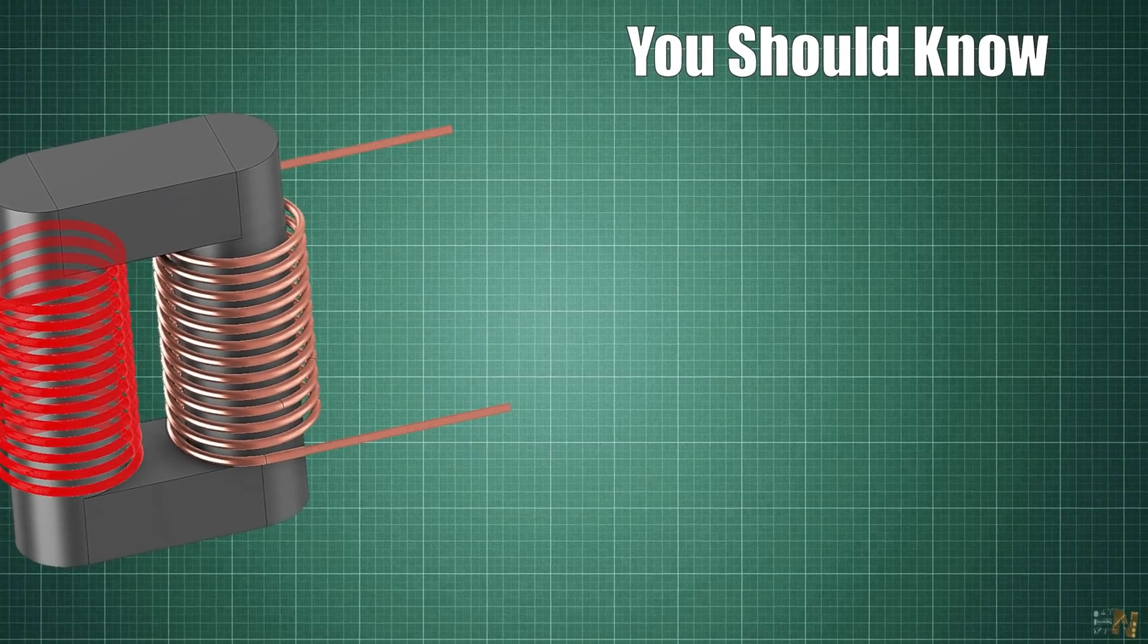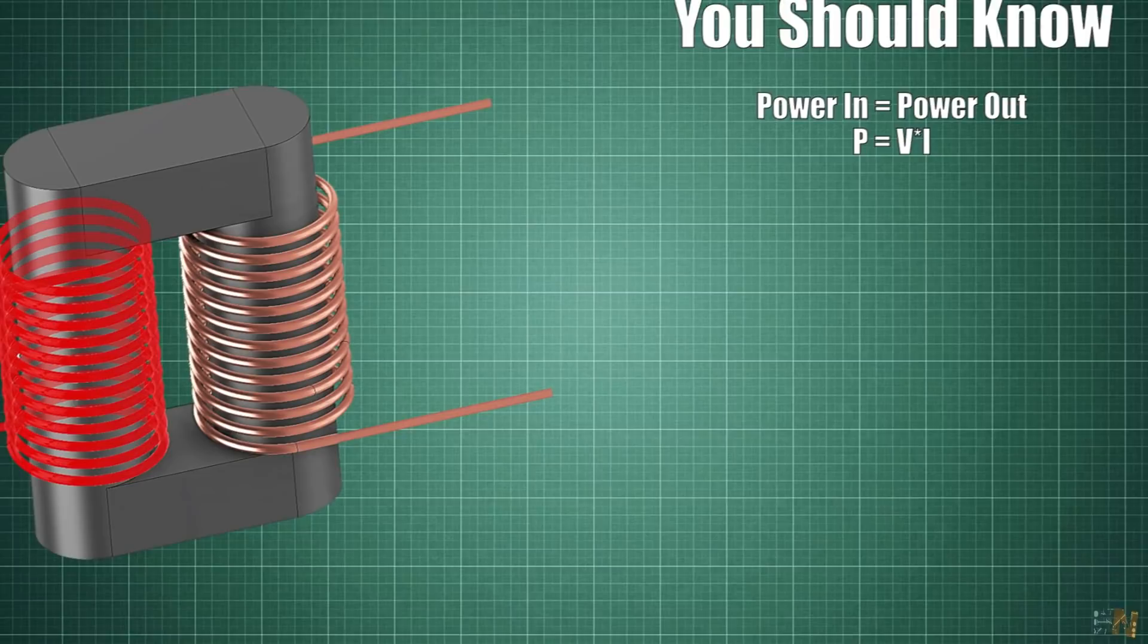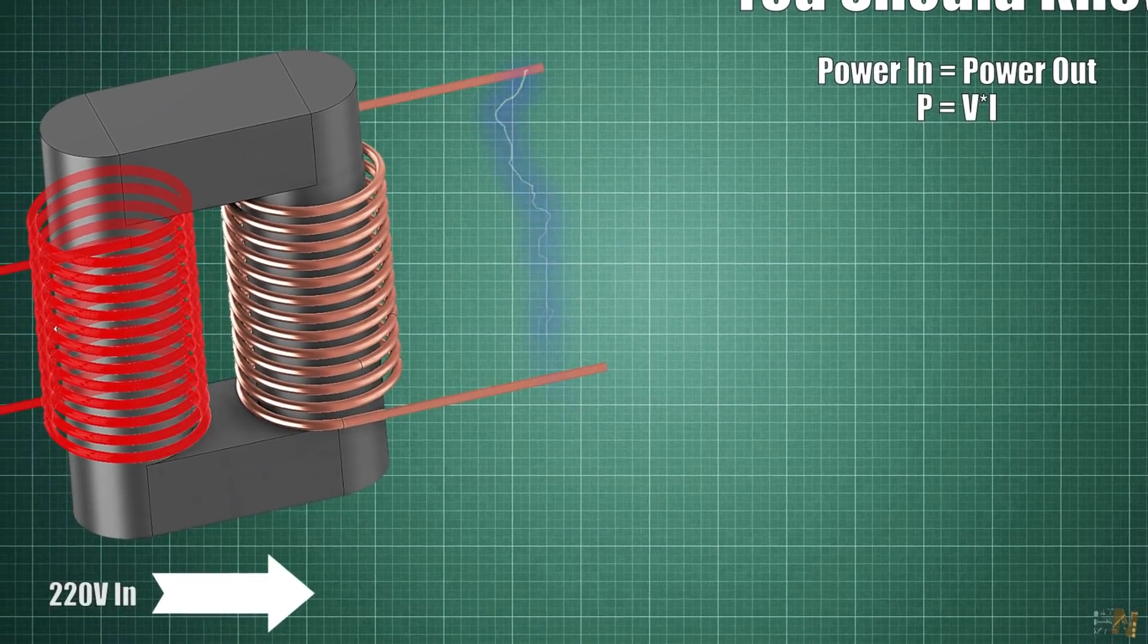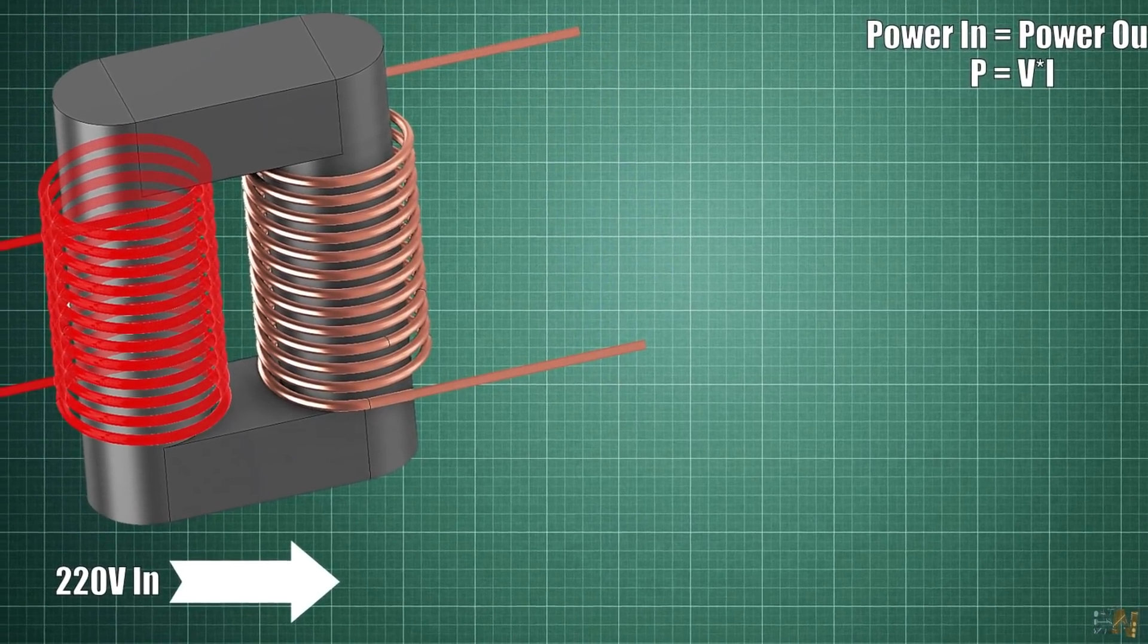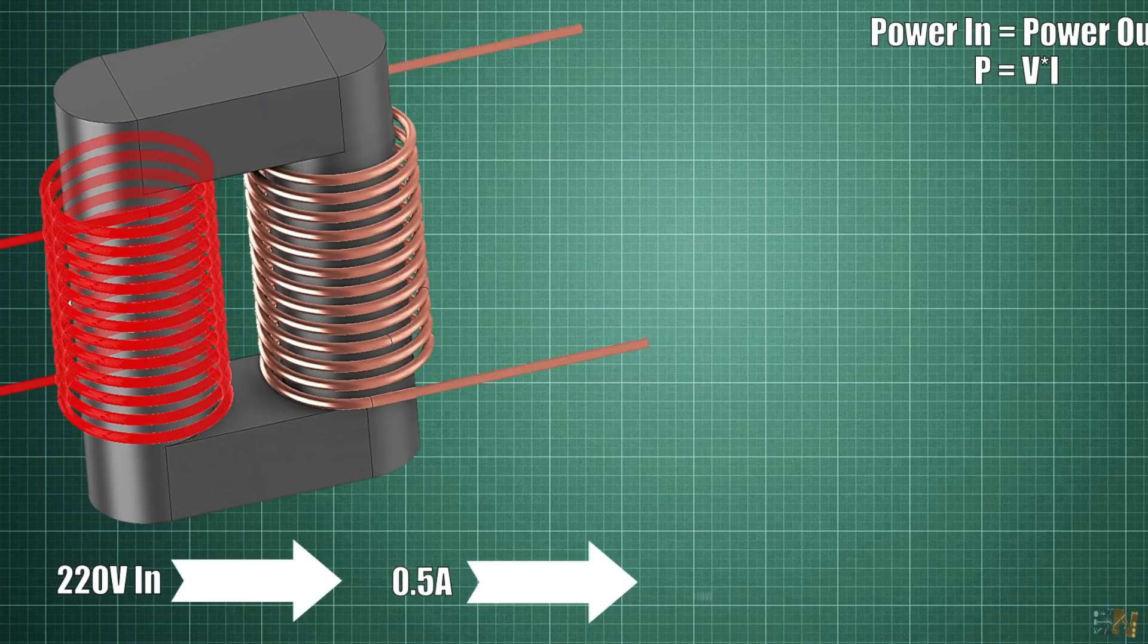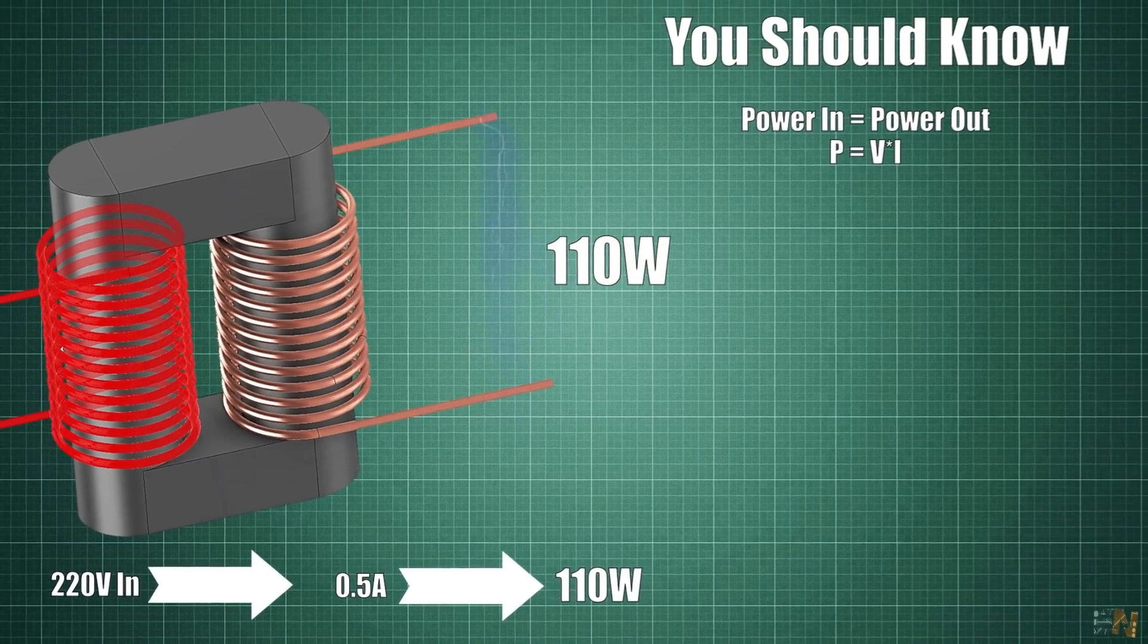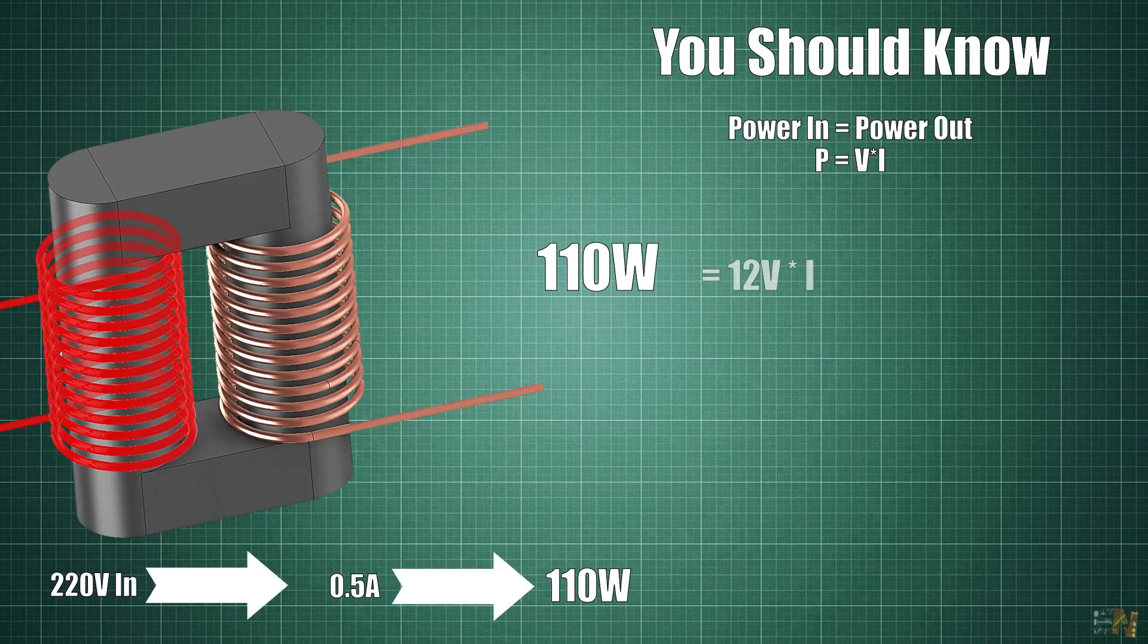You must know that in an ideal transformer, the output power is the same as the input power. But power is voltage times current. For example, let's say that the input voltage of a step-down transformer is 220V. The resistance of the coil and the reactance will create a current flow of 0.5A. That's an ideal input power of 110W. So the same could be at the output. But if the output is 12V, then the output current is 110 divided by 12 and that's equal to 9.1A.